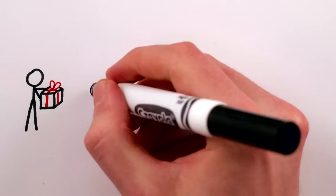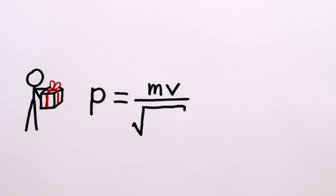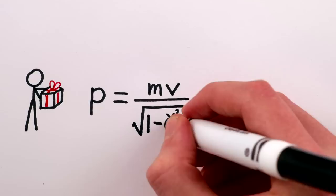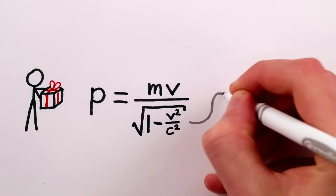you'll find that objects with mass have momentum equal to their mass times velocity divided by the square root of 1 minus velocity squared over the speed of light squared. That square root part doesn't make much of a difference